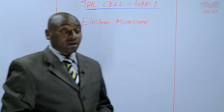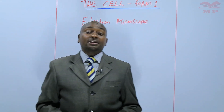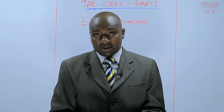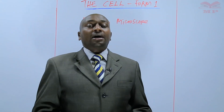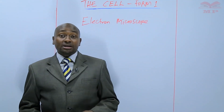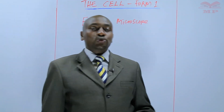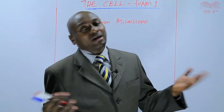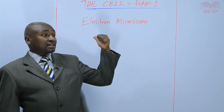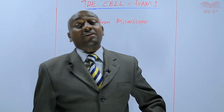Previously, we learned about the light microscope and we discussed that a light microscope uses light to illuminate the specimen. On the other hand, the electron microscope uses beams of electrons to illuminate the specimen. We had earlier said that a light microscope has a magnification of about 1,000 times, but an electron microscope has a very high magnification and can go up to 500,000 times.